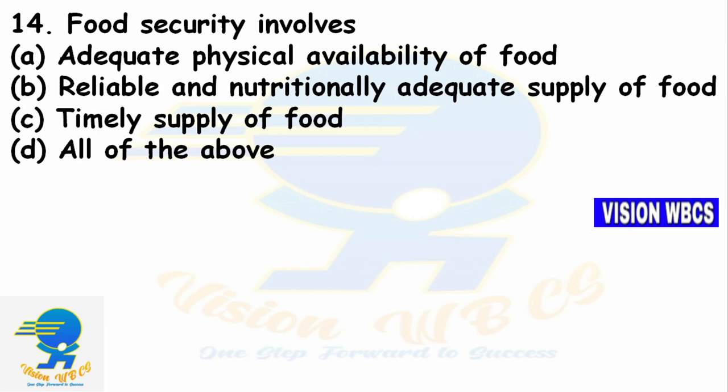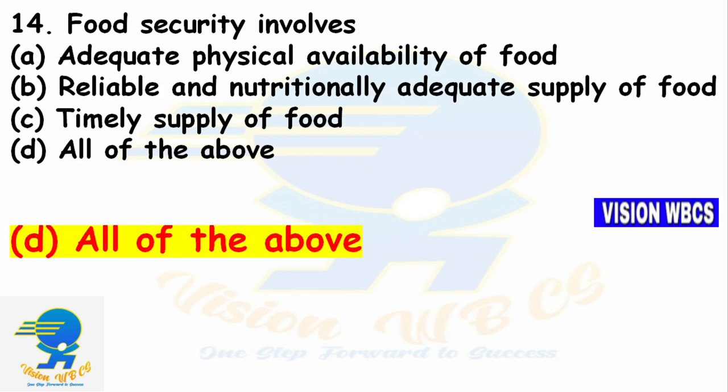Question 14: Food security involves? Option A — Adequate physical availability of food. Option B — Reliable and nutritionally adequate supply of food. Option C — Timely supply of food. Option D — All of the above. The right answer is Option D: All the above — adequate physical availability, reliable and nutritionally adequate supply, and timely supply — are all important components of food security.